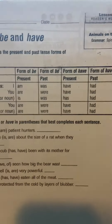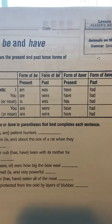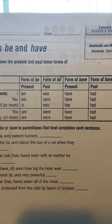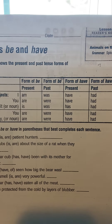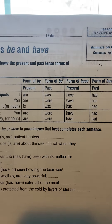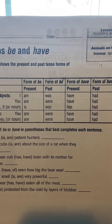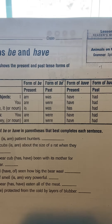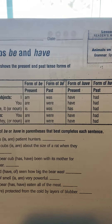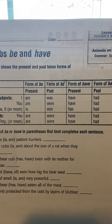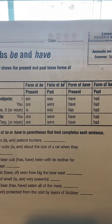So for be in the present form you would say am, are, is — like I am, you are, he/she is.